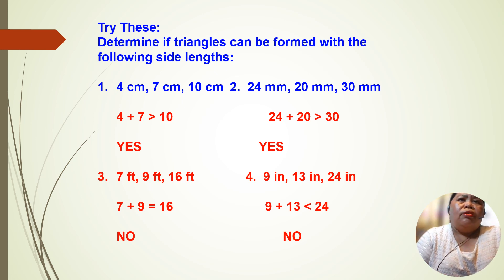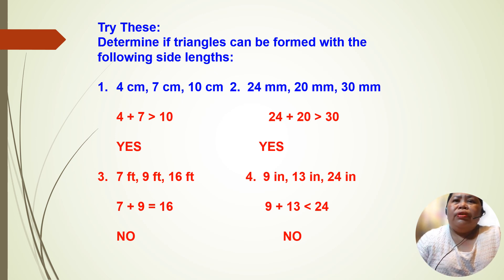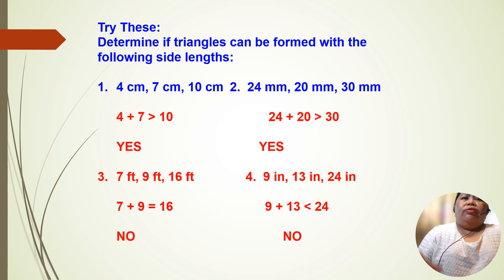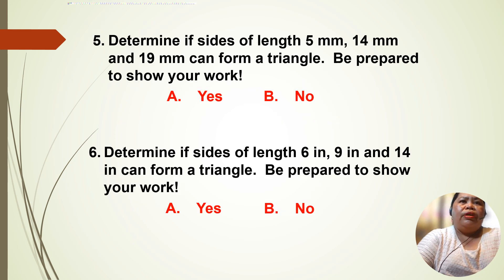Let's review the answers. For numbers 1 and 2, we are correct. For number 4, 7 plus 9 is 16, which is equal to 16 — so the answer is no, because they must never be equal; it should be strictly greater. And 9 plus 13 — we are correct there as well.